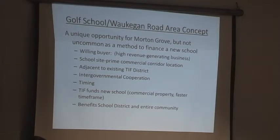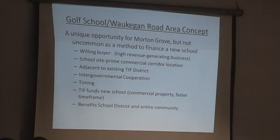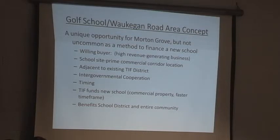On a square-foot basis, it's probably one of the highest possible revenue generators. The school site is in a prime commercial corner location. If we had to plan Morton Grove over again, we probably wouldn't put the school site on Waukegan Road. There are roughly 35,000 to 38,000 cars a day traffic-wise, and it's high speed — so that wouldn't be the optimal school site. On the other side, if you're an auto dealer who likes frontage and good depth for inventory and support services — car wash, garage, everything else — this is a terrific site.